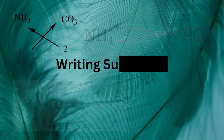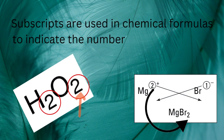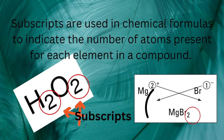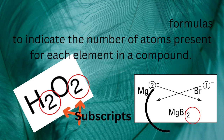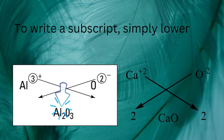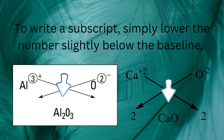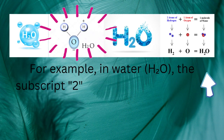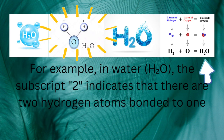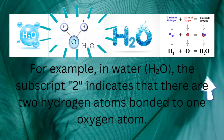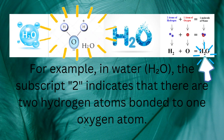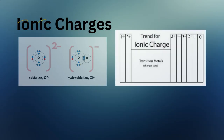Writing subscripts. Subscripts are used in chemical formulas to indicate the number of atoms present for each element in a compound. To write a subscript, simply lower the number slightly below the baseline. For example, in water (hydrogen oxide), the subscript 2 indicates that there are two hydrogen atoms bonded to one oxygen atom.